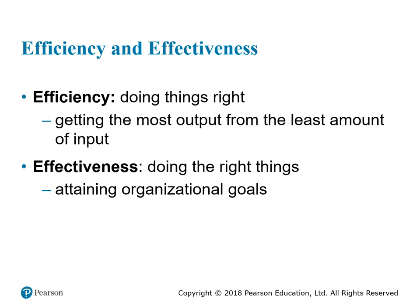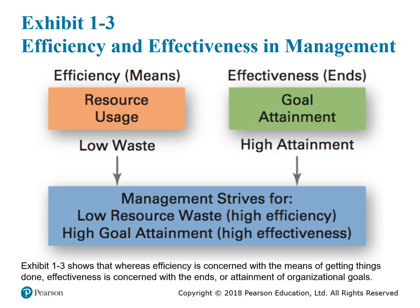To summarize: efficiency is about resources, input and output — doing things in the right way. Effectiveness is about the goal — whether what you are doing is actually achieving its purpose. There is a visual exhibit summarizing what efficiency means and what effectiveness is all about.